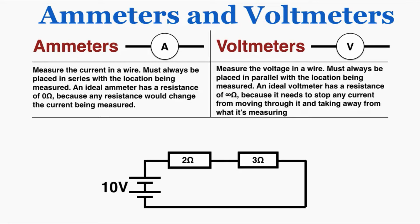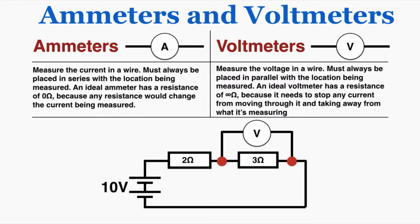Now we can add a voltmeter to measure the voltage across the 3 ohm resistor. According to our rule, we need to put the voltmeter in parallel with the part of the circuit we want to measure. I want to know how much the voltage drops as the current crosses the 3 ohm resistor, so I put the voltmeter in parallel with it. Let me show you why we place it in parallel and why the voltmeter needs infinite resistance.